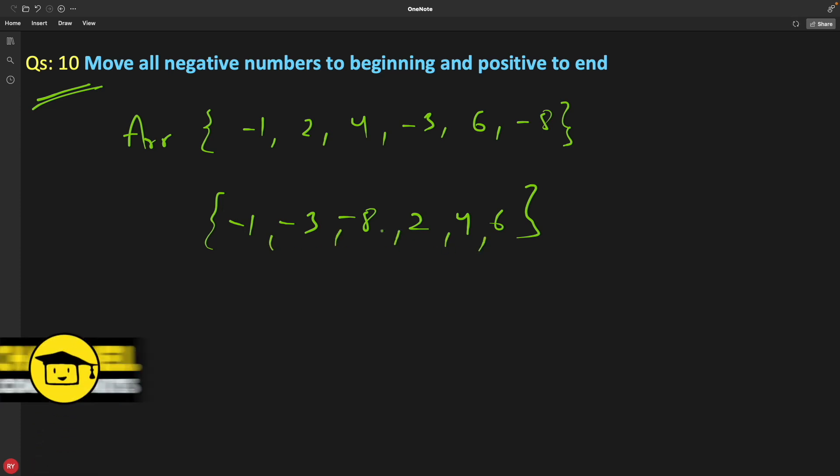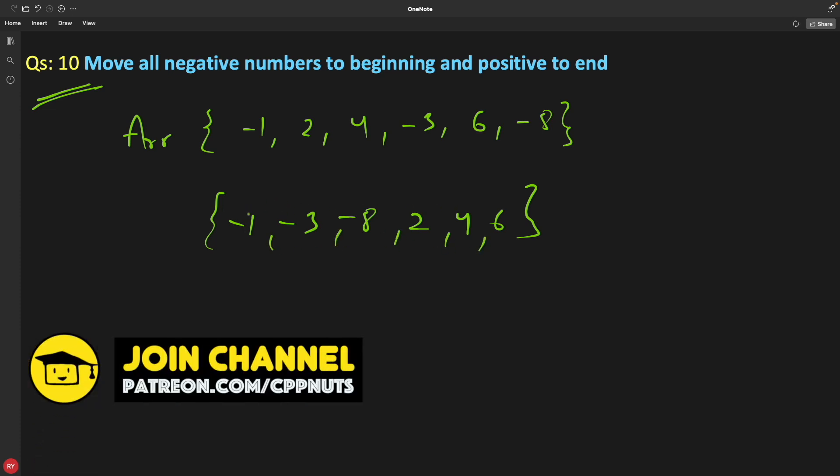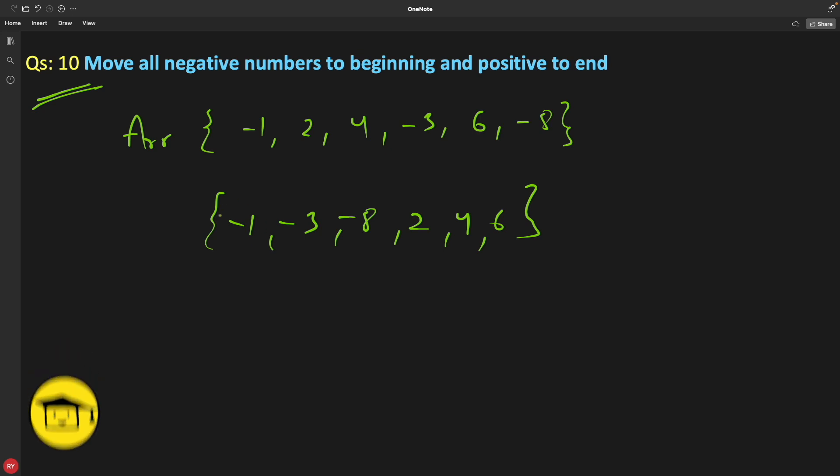I'm not particularly asking you to maintain the order, like minus 3 should come after minus 1 because in the real array it is coming after minus 1. Similarly, 4 should come after 2 because in this original array 2 is before 4. So in the result also it should be like this? No, I'm not asking that.